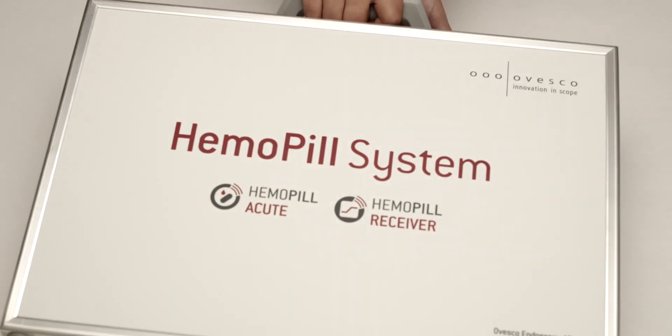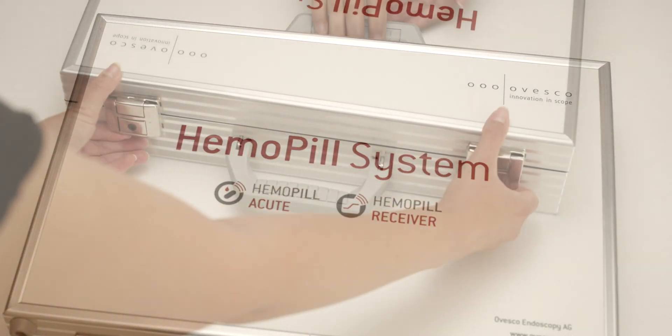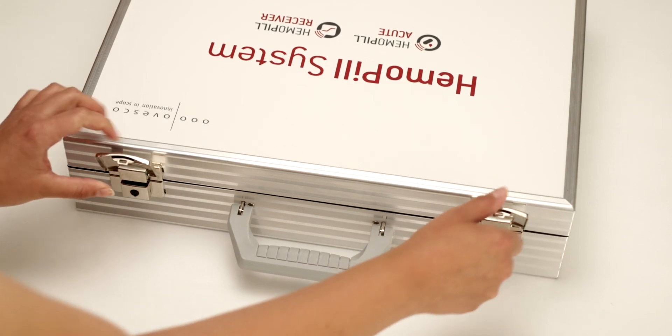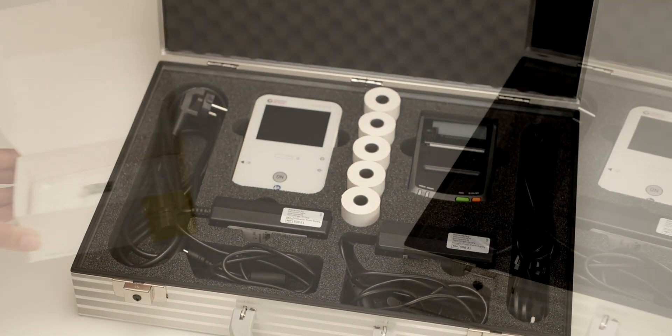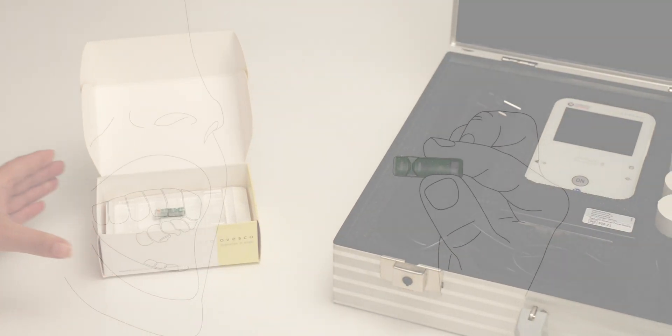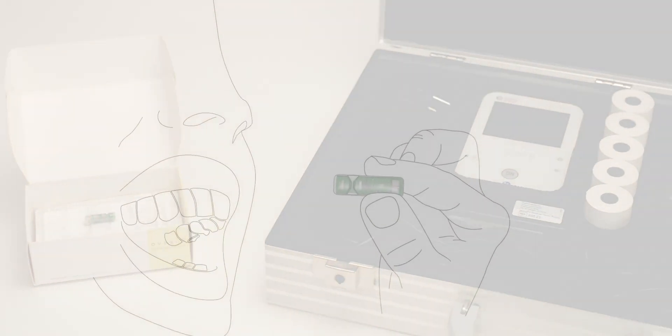Hemopill establishes Ovesco's first product line for telemetric diagnostics. Thanks to a quick and easy measurement, it enables the immediate detection of acute bleeding in the esophagus, stomach, and small intestine.